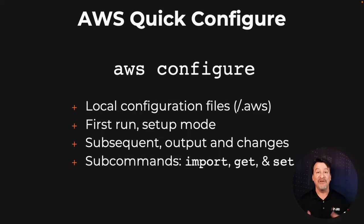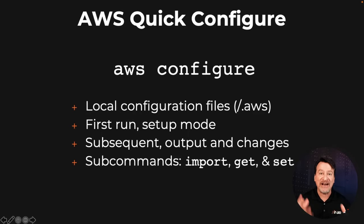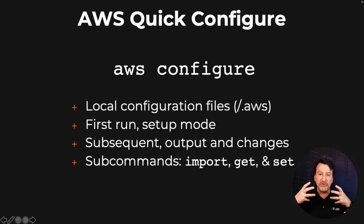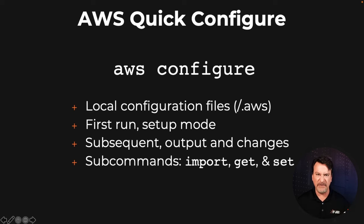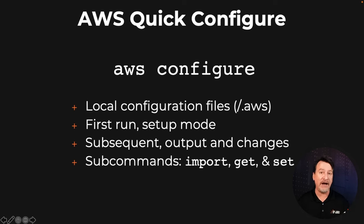Now, AWS configure — or it's called AWS quick configure — this is the way most people actually configure their environment. What it basically does is it lets you set up your .aws directory. It does it automatically for you, creates a config and a credentials file where it puts your information. So what I want to do is actually go and run this on my local computer so you can see how it's done.